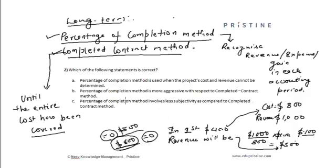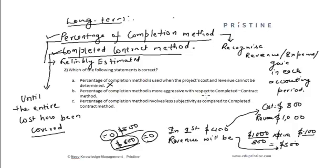Now let us look at the options. Option A states that the percentage of completion method is used when the project's cost and revenue cannot be determined — this is incorrect, as it is used only when the cost can be reliably estimated. Option B states that the percentage of completion method is more aggressive than the completed contract method — this is correct, because we are recognizing income of one hundred dollars in the first year itself.